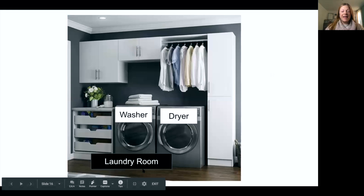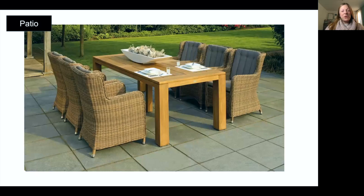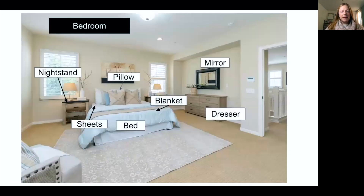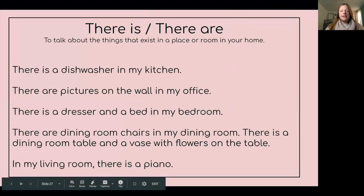In the laundry room there is a washer and a dryer. When talking about things inside a room, for example in the bedroom, I would say: in the bedroom there is a bed, there is a dresser, there are blankets, there are pillows. To describe the things in a room, use 'there is' or 'there are' — not 'have.'